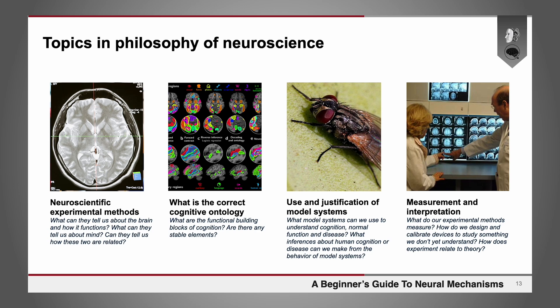We might ask what the correct cognitive ontology is. If we're trying to understand cognition, what are the elements of cognition? What are their functional building blocks? Are they stable, or do they vary depending on context? How do we figure out what they are? I'll discuss more about that in another lecture.